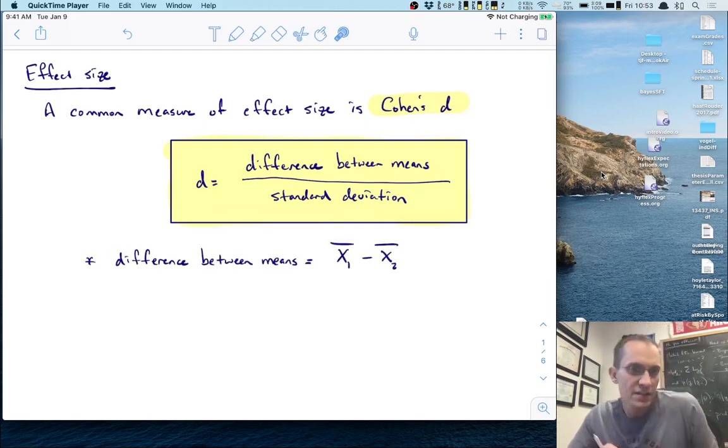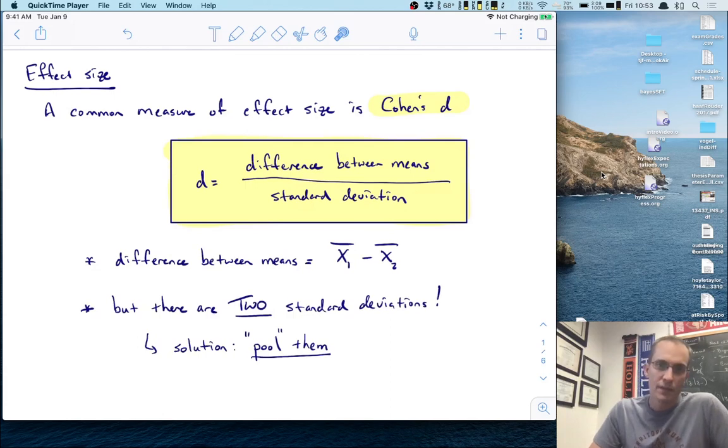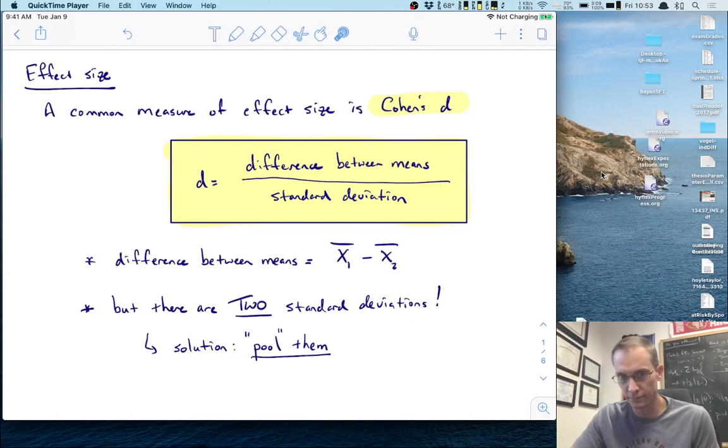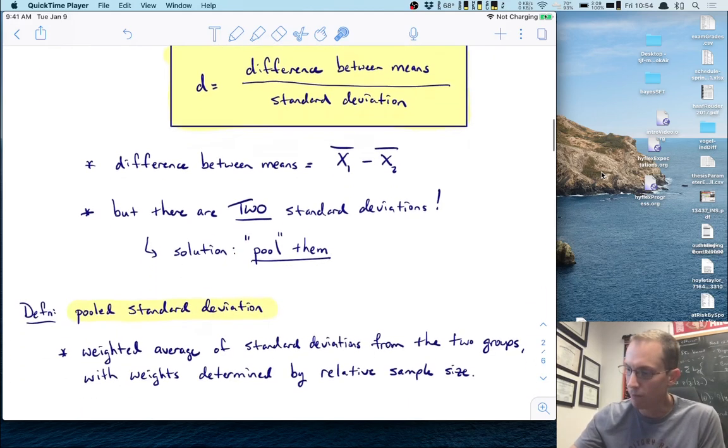The difference between means is easy to compute - just subtract those two group means. But what about the standard deviation? This presents a problem because there are actually two standard deviations here. The solution is that we are going to pool these two standard deviations into one.